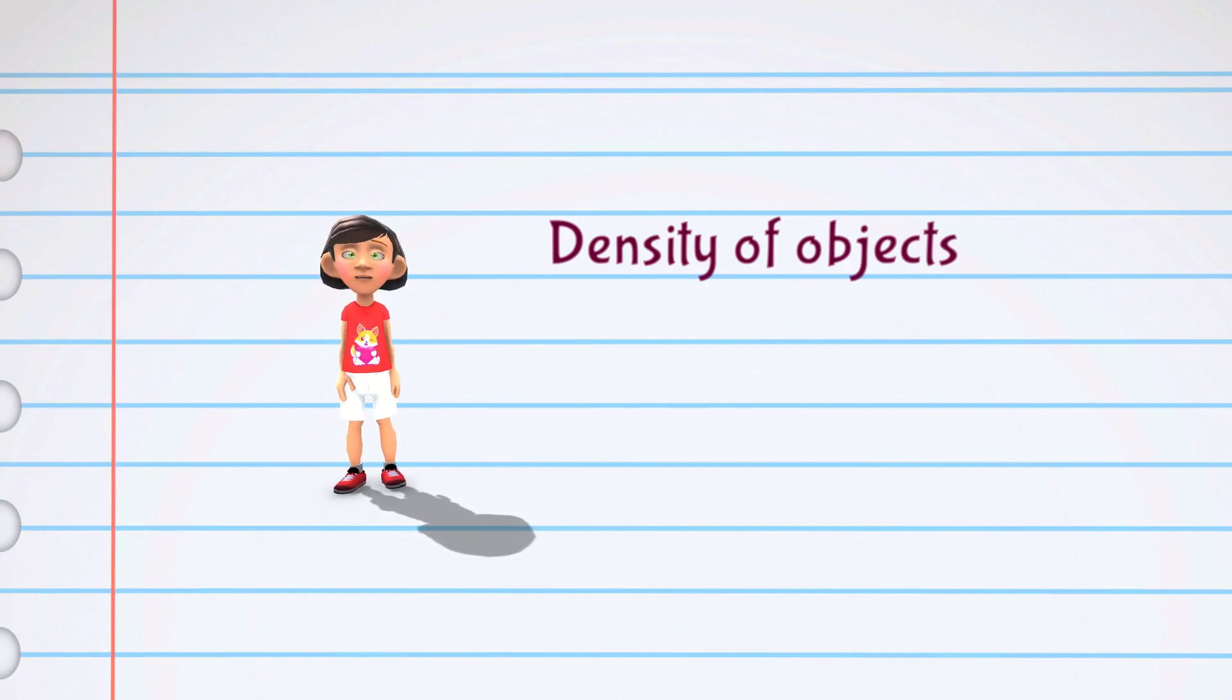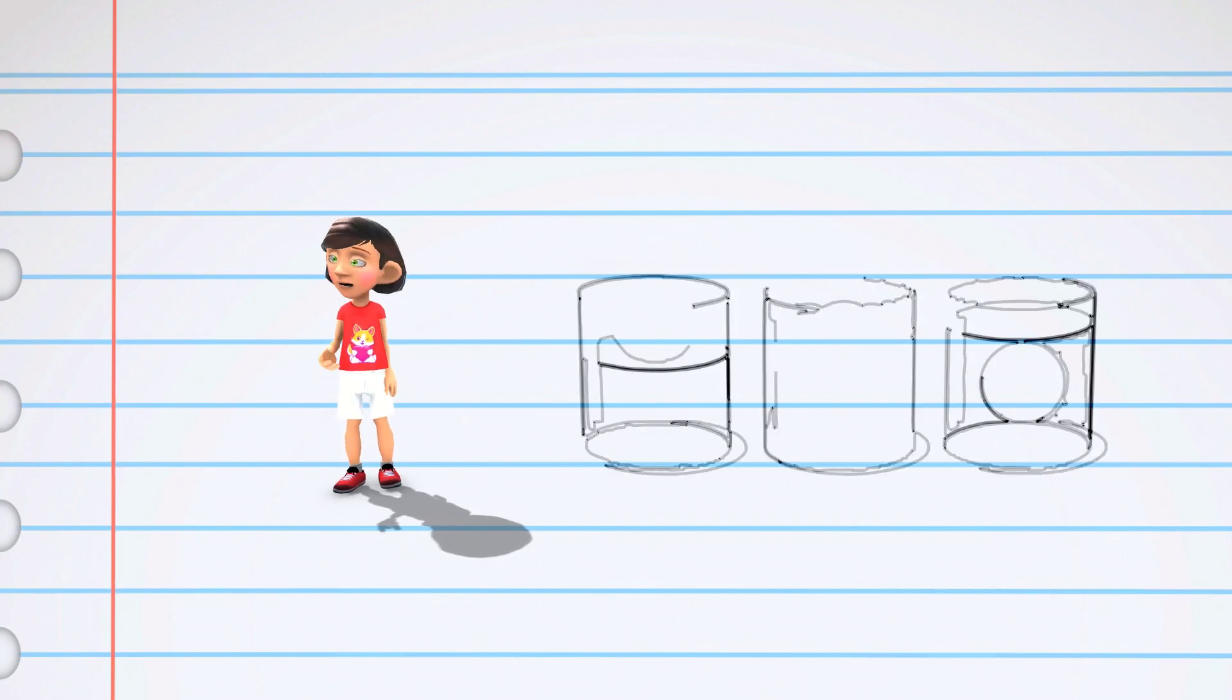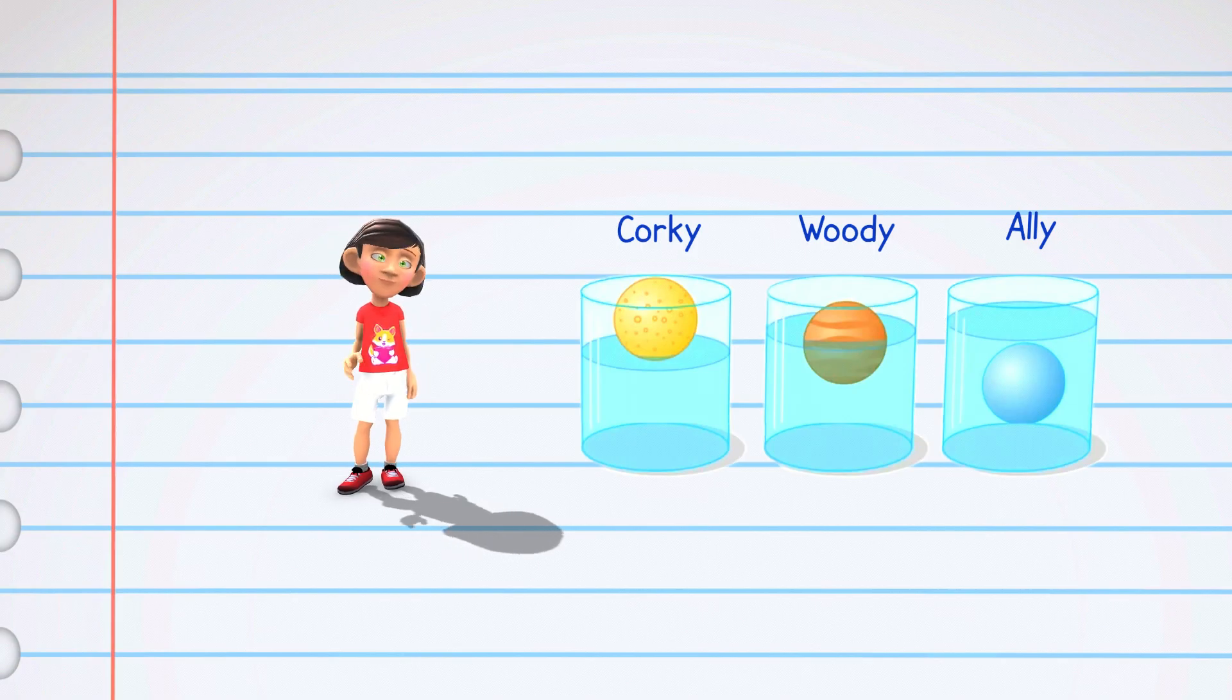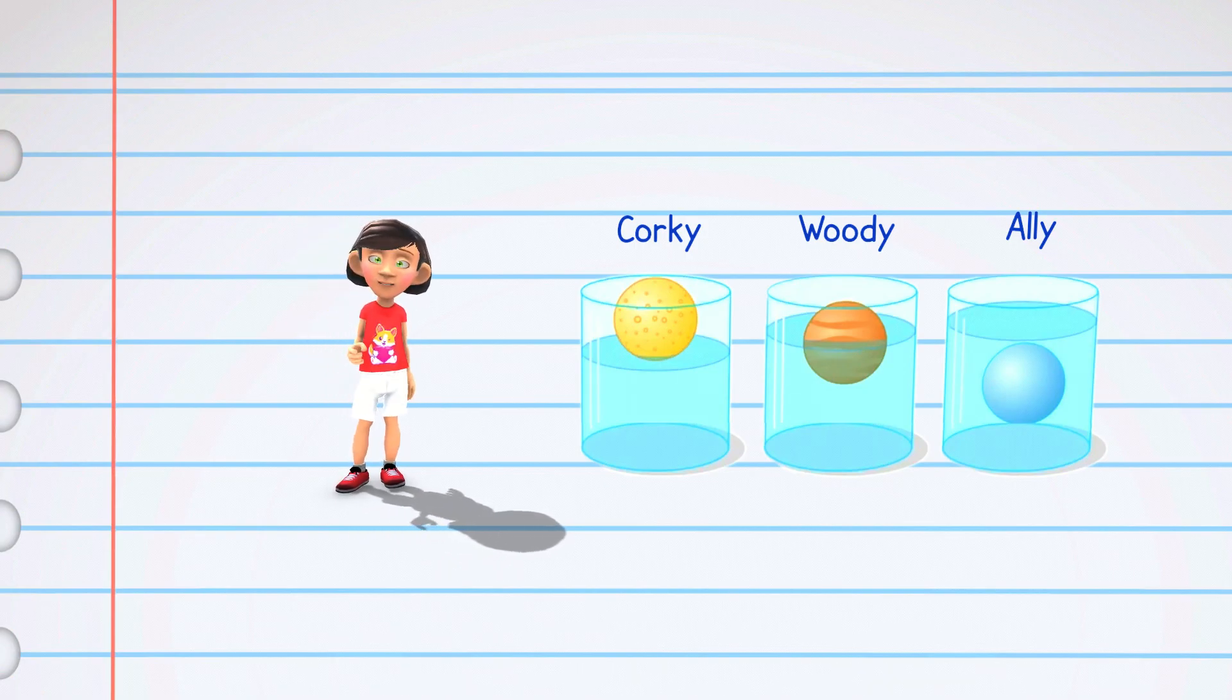Imagine we have three friends: Corky the cork, Woody the wood, and Ally the aluminum. Corky the cork is like a buoy. When we put him in water he happily bobs on the surface like a leaf floating in a pond. Cork is not very heavy, so it loves to stay above the water.